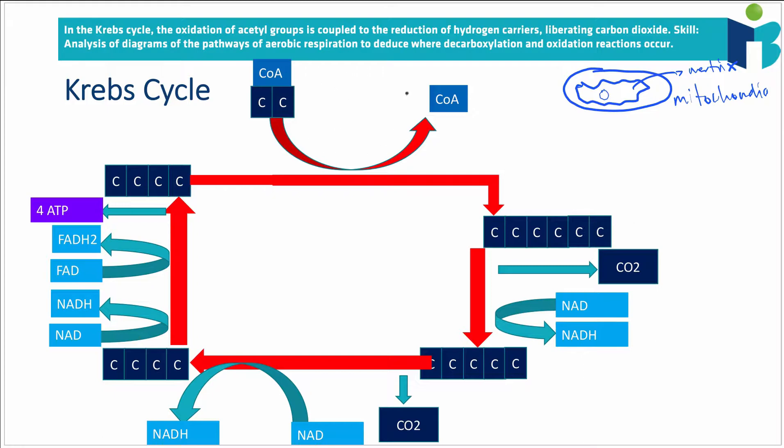So it's kind of like a shuttle, the CoA, like one of those airport shuttles. It just goes back and forth, back and forth. So a four-carbon molecule joins with a two-carbon molecule to make a six-carbon molecule.